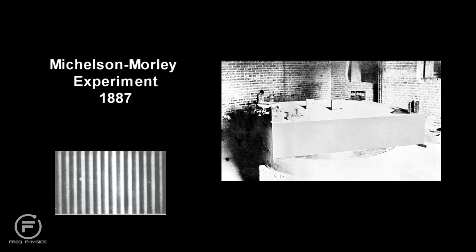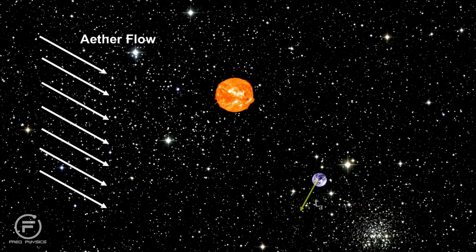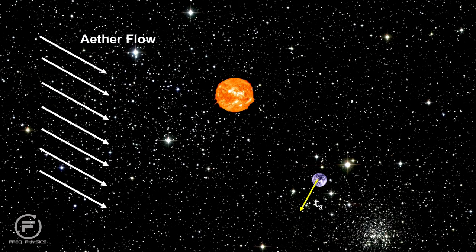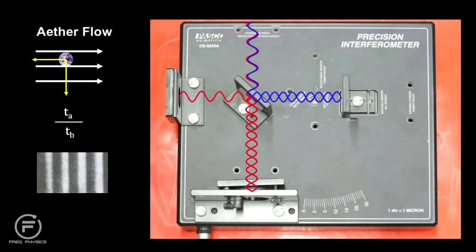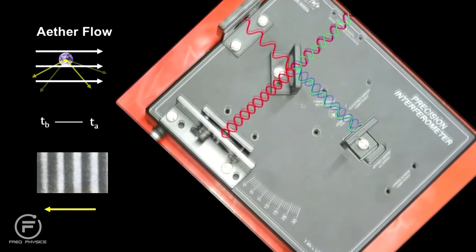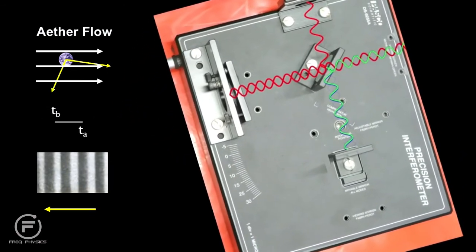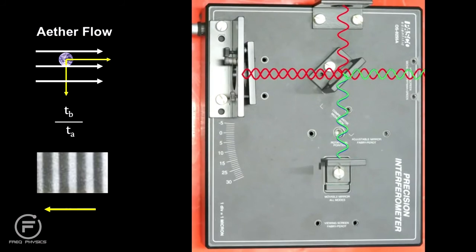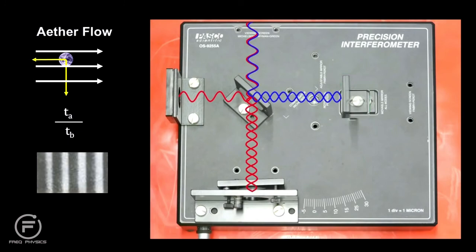Here's the actual interference pattern they saw. As the interferometer is rotated, the light flowing perpendicular to the direction of the ether would take time T sub A, and the light flowing with and against the ether would take time T sub B. Rotating the interferometer would change the ratio from T sub A over T sub B to T sub B over T sub A, and the interference pattern would shift. Using the speed of the Earth through the ether, they estimated that the shift in the pattern would be just under one half of a fringe.